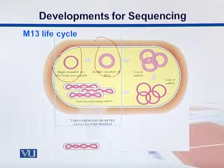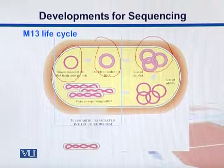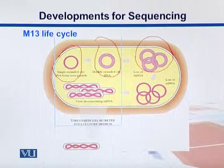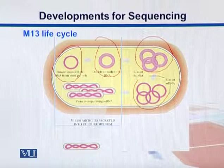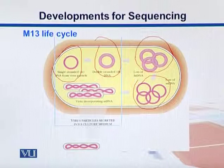This double stranded form gets replicated, so we get a lot of double stranded forms. After that they give rise to a lot of single stranded forms, and then these single stranded forms get packed into the virus.